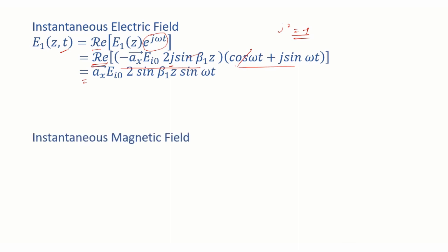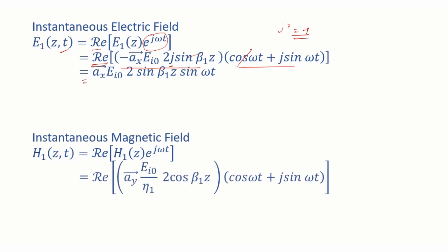Similarly, for the instantaneous magnetic field H1(z,t) = Re[H1(z)·e^(jωt)], substitute H1(z) and e^(jωt). There is no J term in the cosine expression, so it is purely real. Real times real gives a real term — this is selected. The next term is imaginary, so real times imaginary is imaginary and we exclude it. The result is H1(z,t) = y-hat · (EI0/η₁) · 2 cos(β₁z) · cos(ωt).